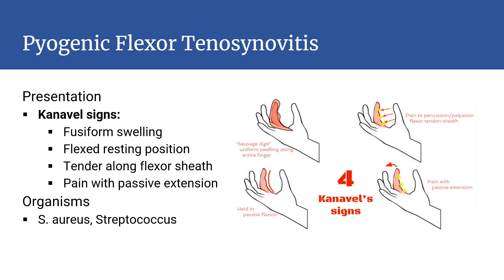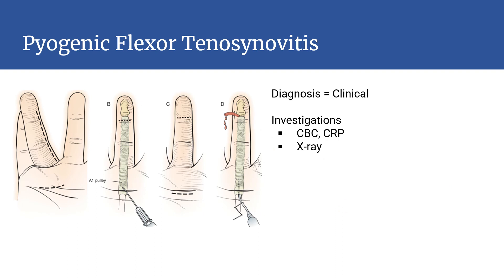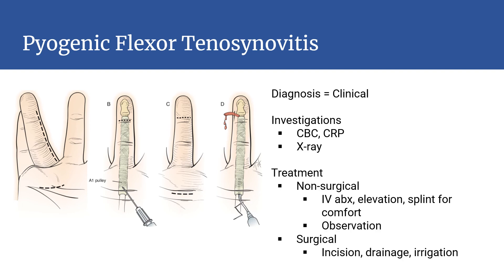The most common organisms identified are Staph aureus and Streptococcus species. Pyogenic flexor tenosynovitis is diagnosed clinically; however, if the diagnosis is not clear, investigations such as CBC, CRP, and X-ray can be performed. Early infections may respond to conservative management with strict elevation, rest, and IV antibiotics. Failed non-surgical management requires surgical intervention, which involves incision, drainage, and irrigation of the flexor tendon sheath.